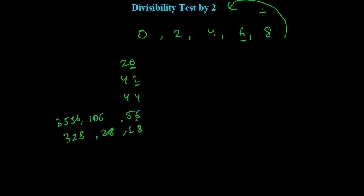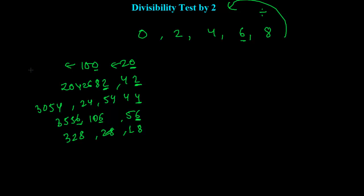Any number you choose — if the last digit is 6, or any number ending in 4 like 54, 24, or 3054 — anything you choose. Any bigger number that ends with 2, 0, 4, 6, or 8, like 100 or 24 — these kinds of numbers which end with 0, 2, 4, 6, or 8 are all divisible by 2.